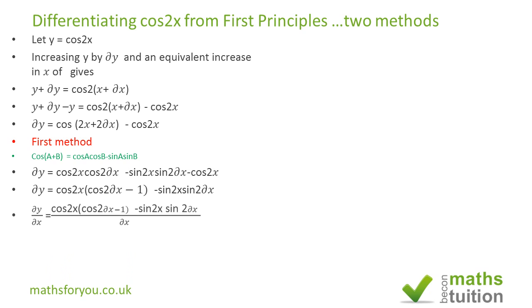If we then divide both sides by delta x, we end up with this here. And as delta x approaches zero, cos 2 delta x, which is almost zero, will give us a value of 1.